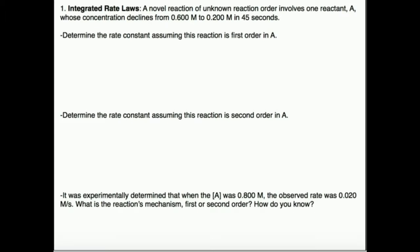We're going to do two things. Number one, we're going to determine the rate constant assuming the reaction is first order in A, and then we're going to determine the rate constant assuming the reaction is second order in A. All right, so let's do the first order one. We're going to do that one in this video, and then we are going to do the second part in the second video.